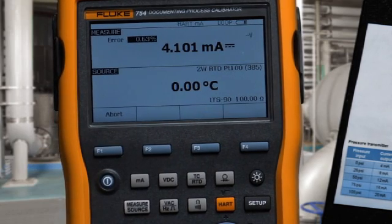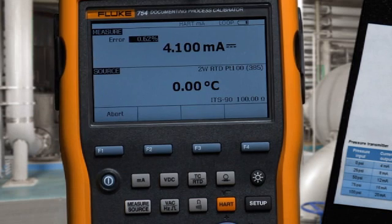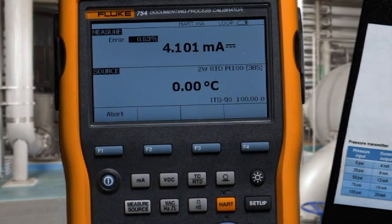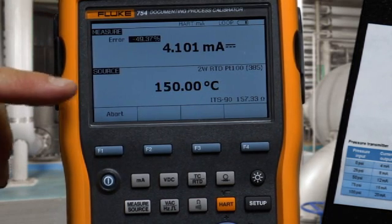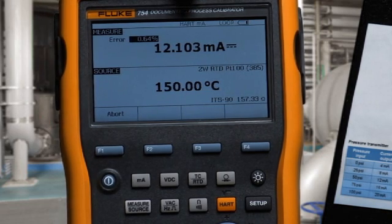An auto test to automatically document the applied temperature, the measured current, and the error percent of span. Next, the 50% value is applied, the 50% milliamp value is measured, and the error percent of span is calculated.